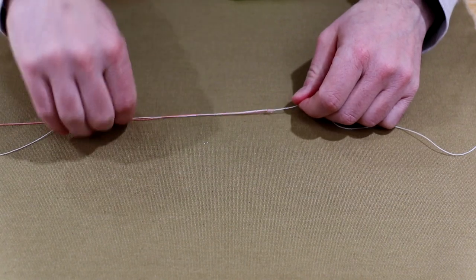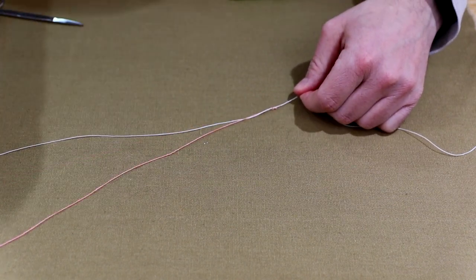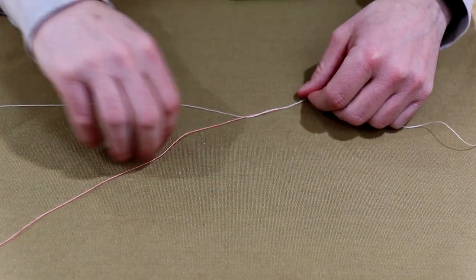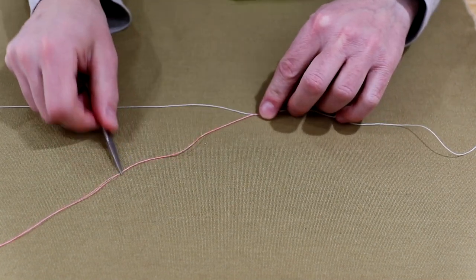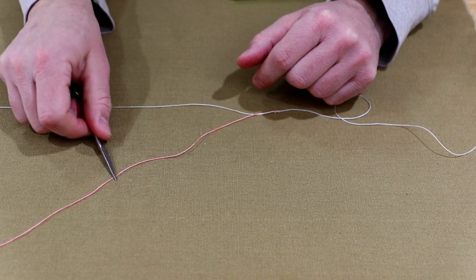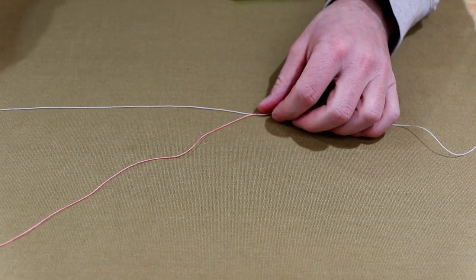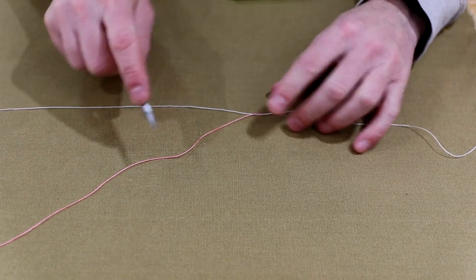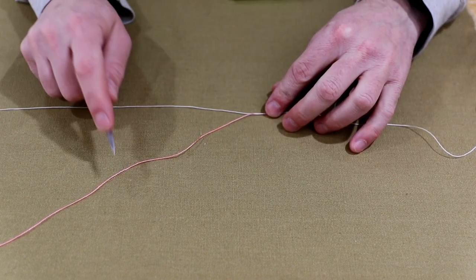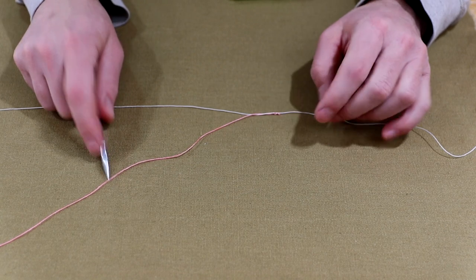But we can use this section that goes down towards the point fly, towards the terminal end. You can use this and add your dropper here, and then your point fly would go on the leader itself. Just so you know, always use the bottom section of the dropper tag on your surgeon's knot, never use the top. The top will break off.